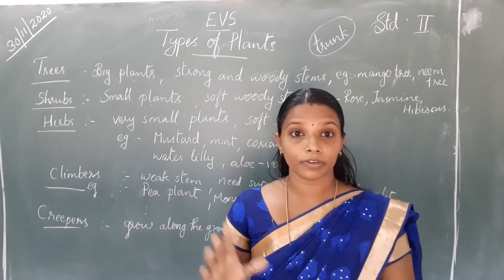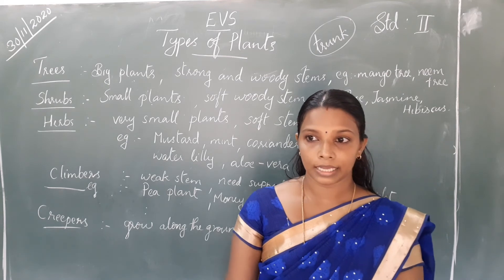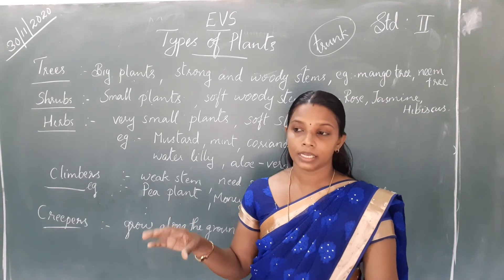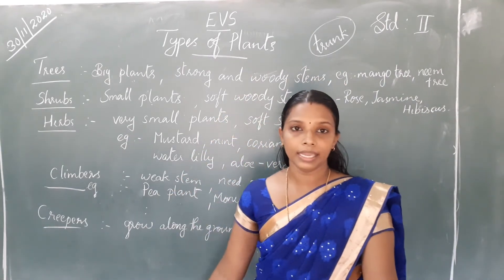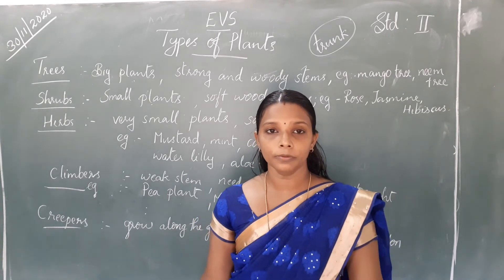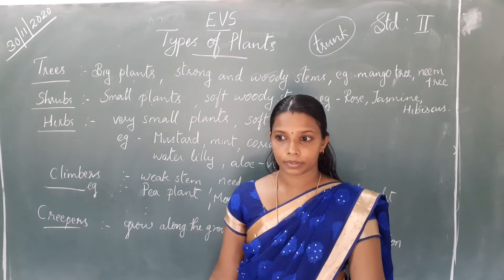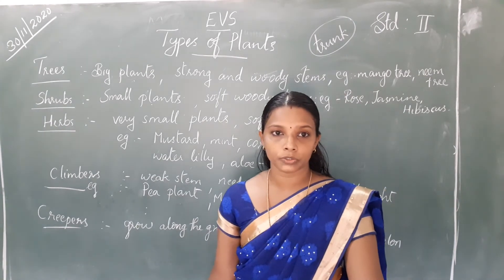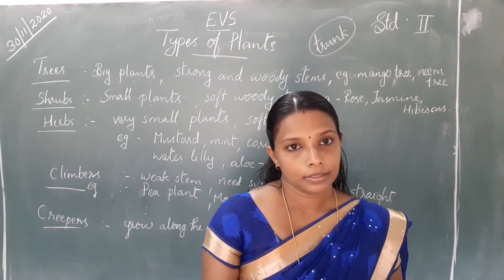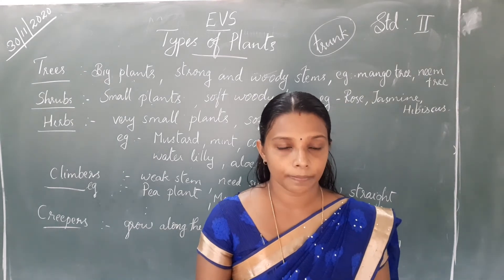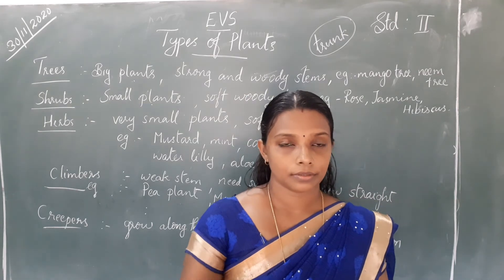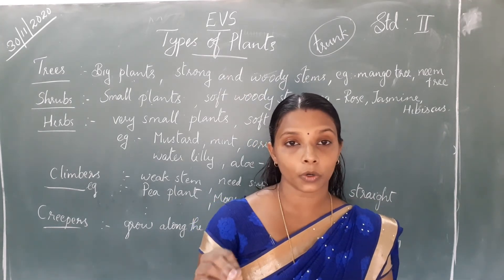Trees are very big, strong plants. Their hard and woody stem is called a trunk. They live for many years. Examples are Banyan tree, Neem tree, and Mango tree. These trees have branches, but some trees like coconut and palm have no branches.